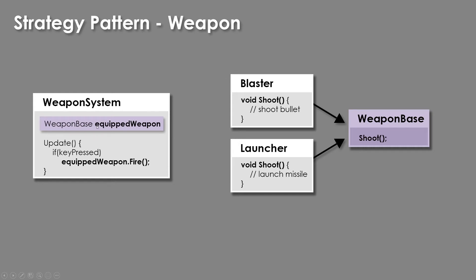In our weapon system, we're going to keep track of whatever our equipped weapon is. And if we press a key, we'll take our equipped weapon as our abstraction, and we know that all weapon bases can shoot, so we know that we can call equipped weapon dot shoot. Then if we have a blaster, it'll shoot, and if we have a launcher, it'll shoot. Note: the slide should say equipped weapon dot shoot — I had dot fire by mistake.